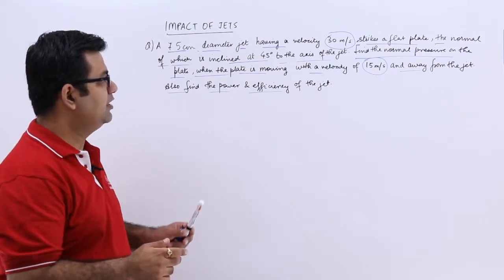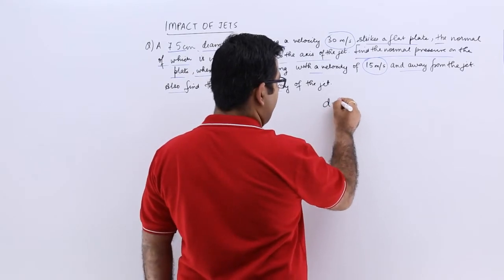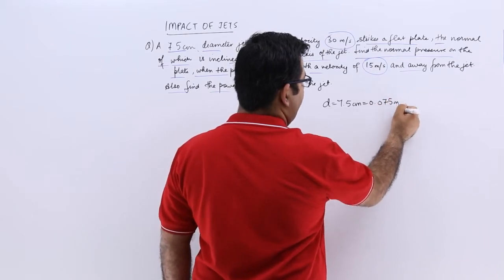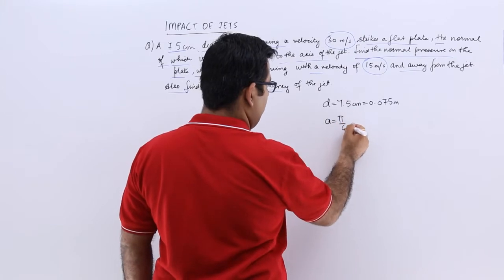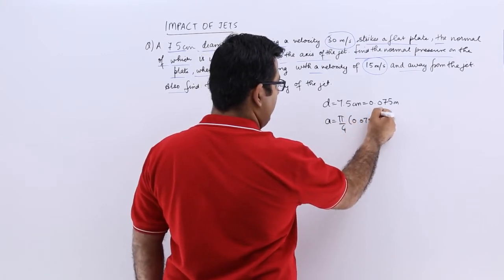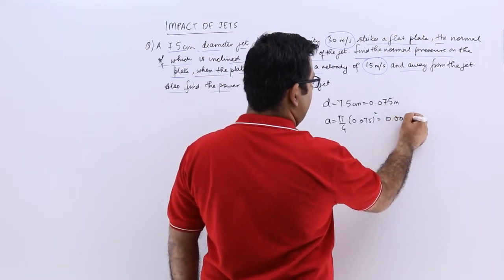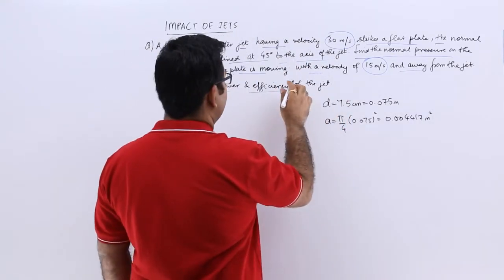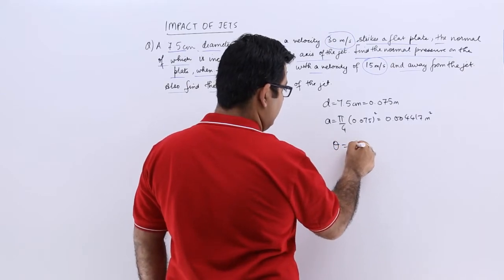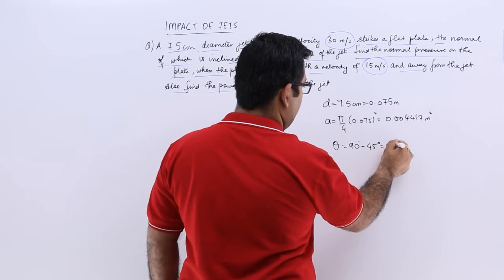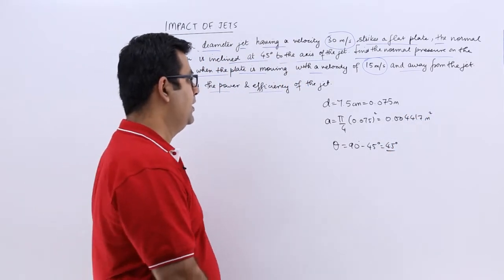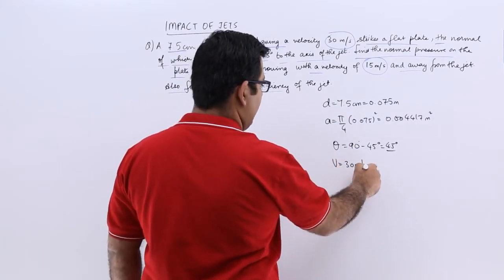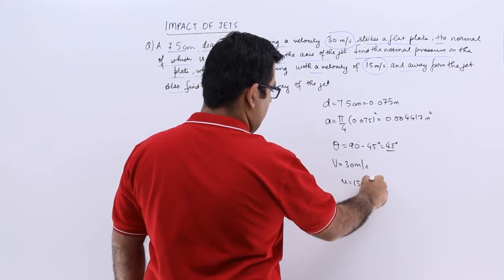So let's write down the given data. The diameter of the jet is 7.5 centimeters, which is 0.075 meters. The area would be pi by 4 into 0.075 squared, which gives you 0.004417 meter square. The angle theta is 90 degrees minus 45, which gives you 45 only. The velocities: V is 30 and u is 15.